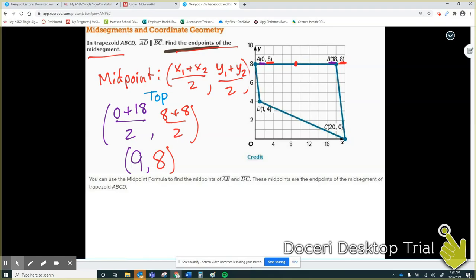However, we are not done. There is also an endpoint on the bottom of the trapezoid. We are going to find it the same way, but we're just going to use two different points. The two different points are the ones on the bottom now. Once again, I'm going to add my x values, 1 plus 20, and then divide that by 2 to find the x-coordinate. And if I add my y-coordinates, which are 4 and 0, 4 plus 0 over 2, I will find the y-coordinate.